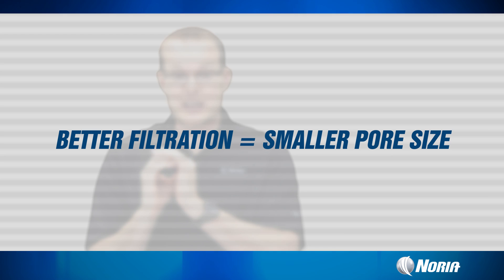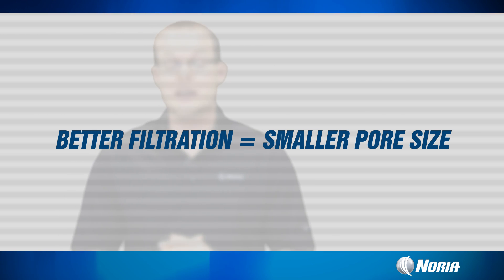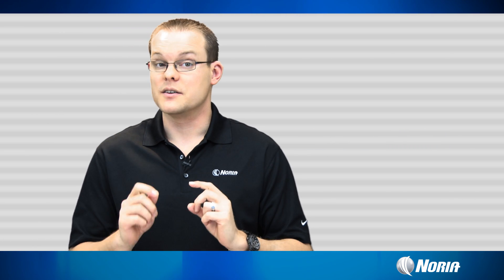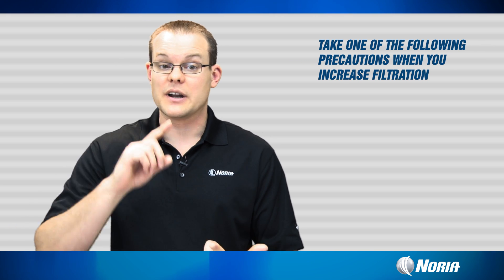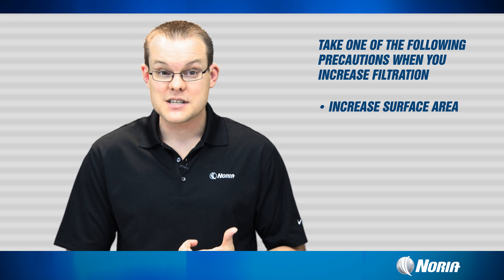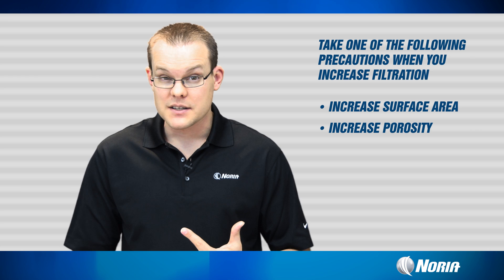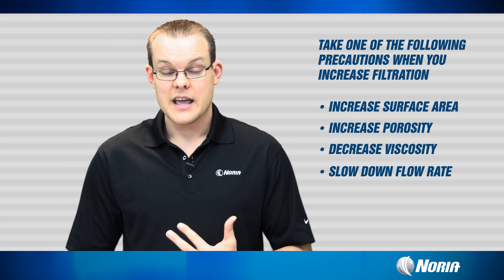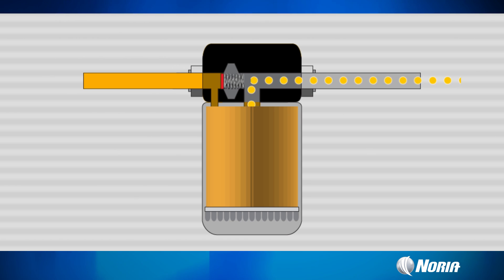There's an inherent problem with this. Everybody wants cleaner fluid — less dirt in the fluid — and one way to do that is to buy better filters with smaller pore sizes. The smaller you make the pore size, the smaller the particle it can take out and the cleaner your fluid will be. But if you buy a better filter with a smaller pore, there are a couple of things to take into consideration. You're going to have to either increase the surface area, increase the porosity, decrease the viscosity of the fluid, or slow down the flow rate. If you don't do one or a combination of those things, trying to push that fluid through a much better filter with much smaller pores is going to raise the delta P to the point where it could crack open the bypass valve — and then you're not filtering anything. The bypass valve will be open, completely bypassing that filter, and you're wasting your time.